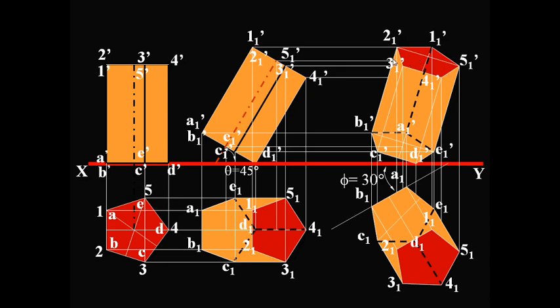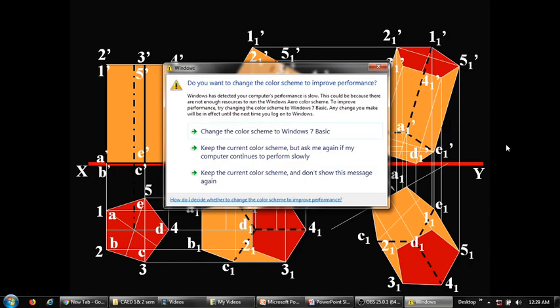Along with the top base, we will be seeing 3 rectangular faces, which are 2, 3, CB and 3, 4, DC and 4, 5, ED. This problem you can take as an assignment and solve it in your sheet or in your assignment book.